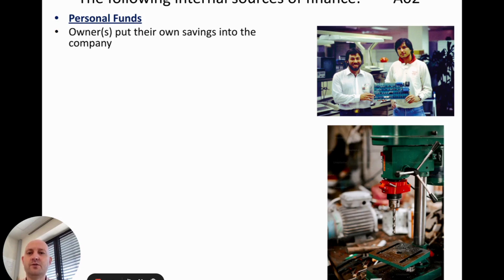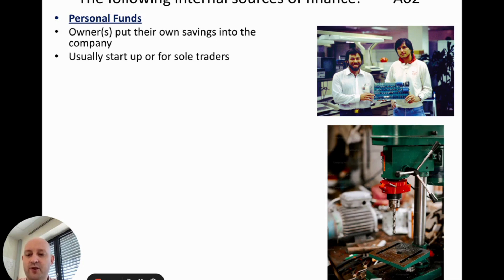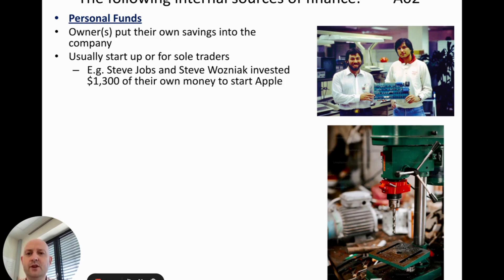The first internal source of finance is personal funds. This is when owners put their own money into the company, and it's normally used for startups or sole traders. A business that's been operating for a year or two might need a bit more money, and the owner puts in more of their own. For example, Steve Jobs and Steve Wozniak invested $1,300 of their own money to start Apple.